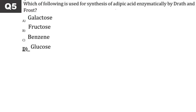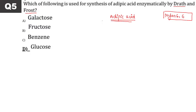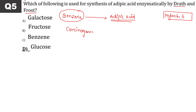5th question: Which of the following is used in synthesis of adipic acid enzymatically by Draths and Frost? Draths and Frost were scientists. We need adipic acid and hexamethylene diamine to make nylon 6,6. Traditionally, adipic acid was made from benzene, but benzene is carcinogenic — it caused cancer in factory workers. So benzene was eliminated and now we use glucose to prepare adipic acid — option number D.